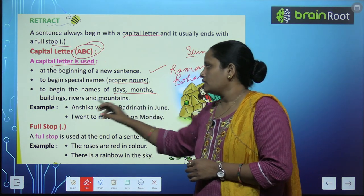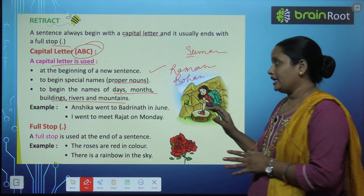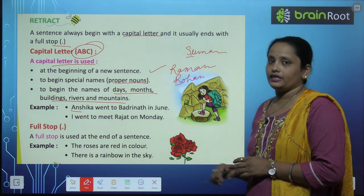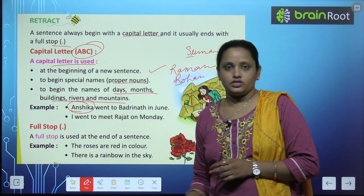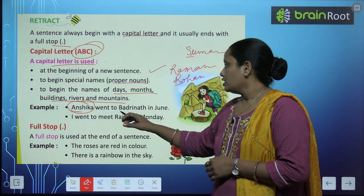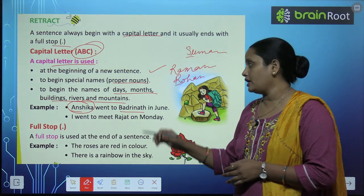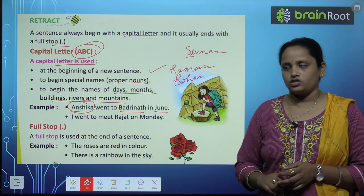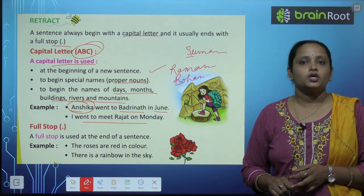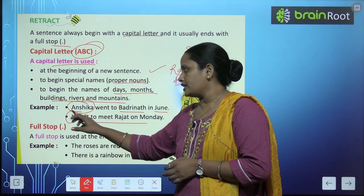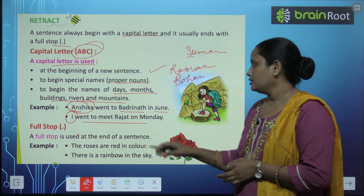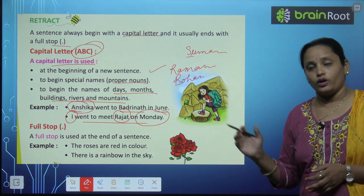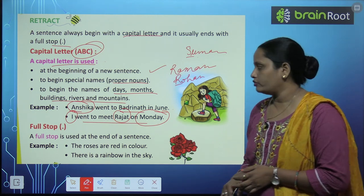Capital letters are also used to begin the name of days, months, buildings, rivers, and mountains. इन names को भी हम capital में ही लिखते हैं. For example: June का J capital, Jamuna का J capital. "I went to meet Rajat on Monday" — I से sentence start हो रहा है तो I capital, Rajat एक special name है तो R capital, और Monday का M capital.